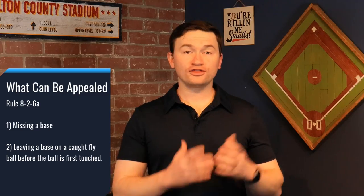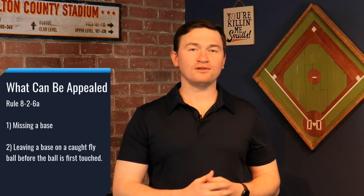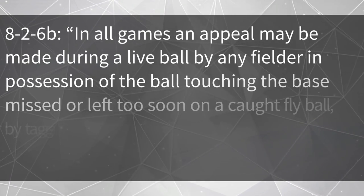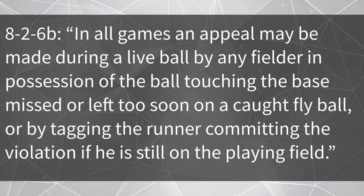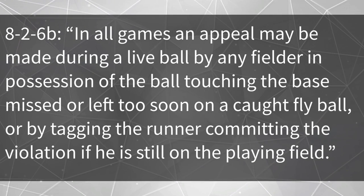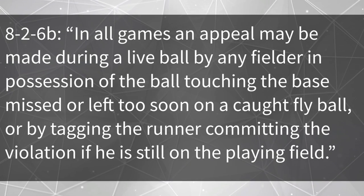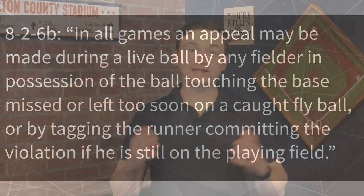The first is a live ball appeal, laid out in rule 8-2-6b. In all games, an appeal may be made during a live ball by any fielder in possession of the ball, touching the base missed or left too soon on a caught fly ball, or by tagging the runner committing the violation if he is still on the playing field. It must be obvious that they are appealing. So if a runner missed a base and there's a play on the following runner into that missed base, the fielder touching the base doesn't immediately trigger an appeal. But if he were to look at you and say that runner over there missed this base, then we know he is appealing and can call the runner out.